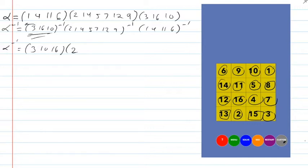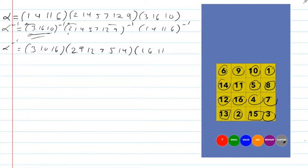Same thing here — I'm going to write the 2 first, then go to the left. As I encounter the numbers, I write them from left to right: 9, 12, 7, 5, 14. And this last cycle — (1, 4, 11, 6) — I'm going to write it as (1, 6, 11, 4).